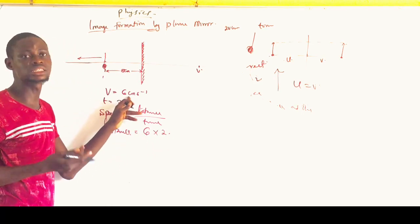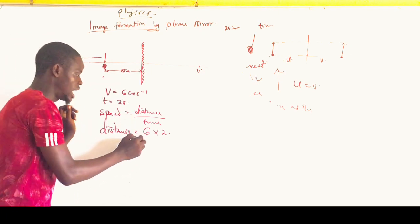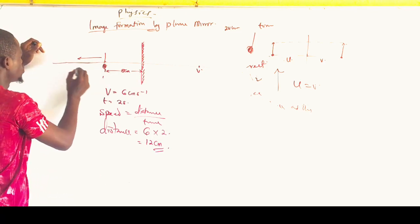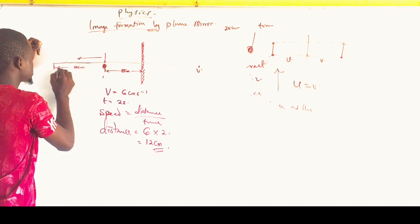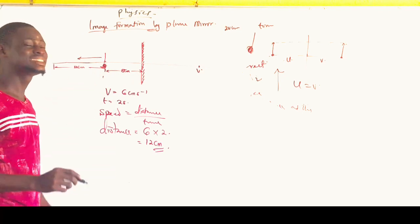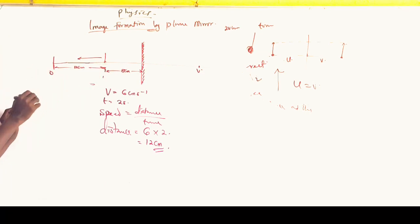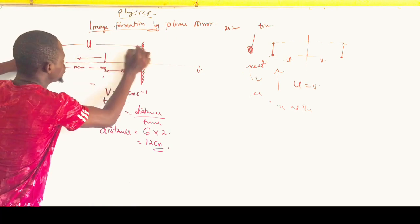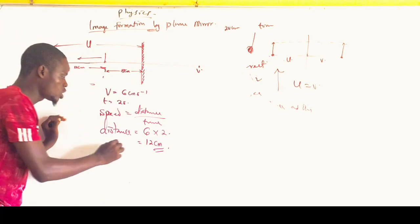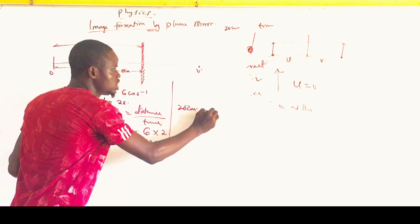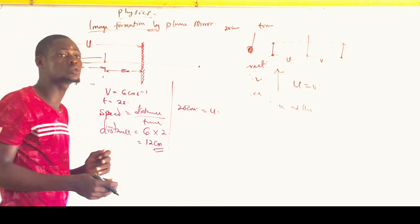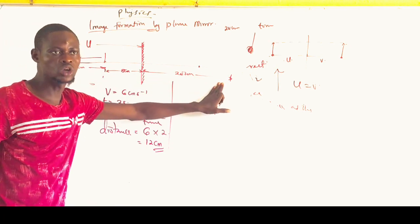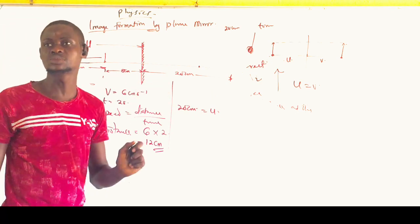The distance covered is 6 times 2, which is 12 cm. You do not need to convert to meters since everything is already in centimeters. So the object moves a distance of 12 cm from its original position. The new object distance is therefore 8 plus 12, which equals 20 cm. Since for a plane mirror the image distance equals the object distance, the new image distance V also equals 20 cm.